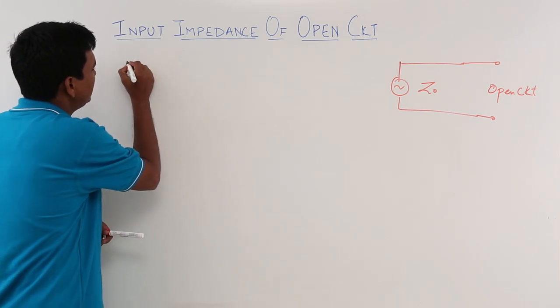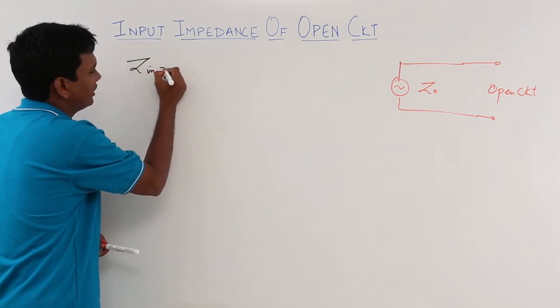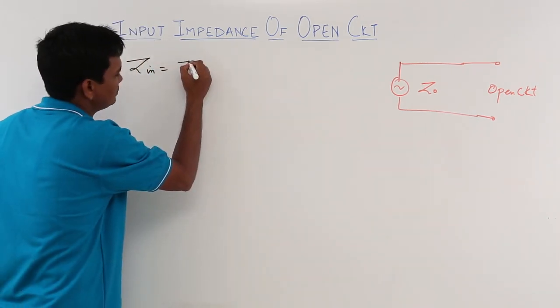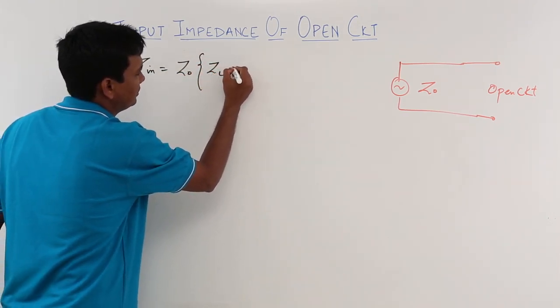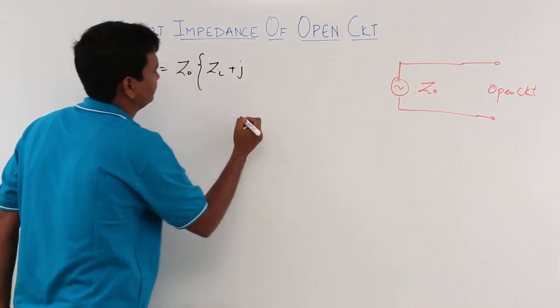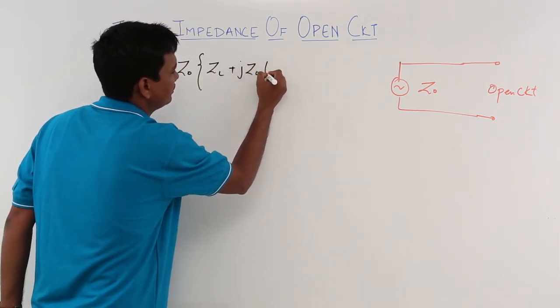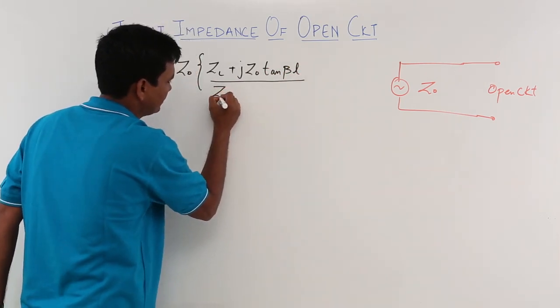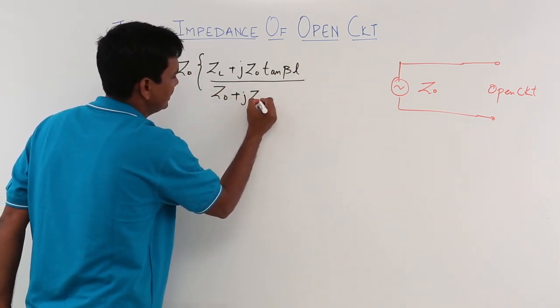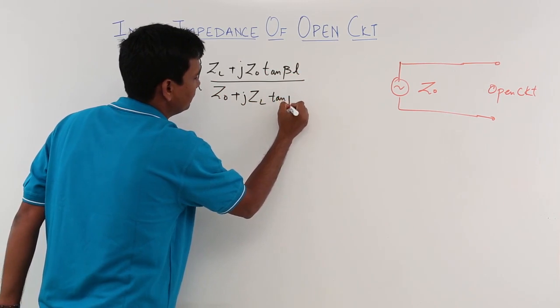What is the equation we know? The input impedance is given by Z in equals Z naught Z L plus J Z naught tan beta L divided by Z naught plus J Z L tan beta L.